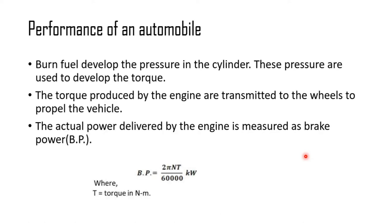The performance of an automobile depends upon the brake power. Brake power is the actual power generated by the engine, denoted as BP. BP equals 2πNT divided by 60 multiplied by 1000, in kilowatts, where N is the revolution in RPM and T is the torque in Newton meters.